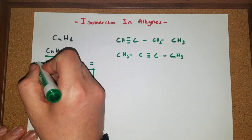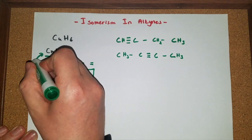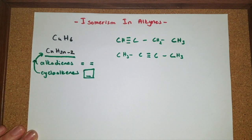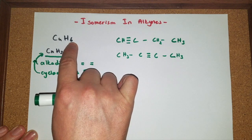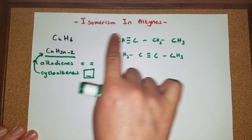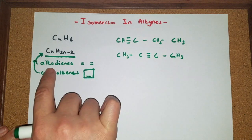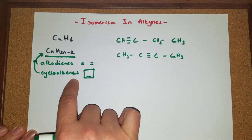They also have the same general formula as alkynes. So if you have four carbon atoms and six hydrogen atoms in your structure, your compound could be an alkyne, but it can also be an alkadiene or cycloalkene.